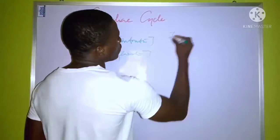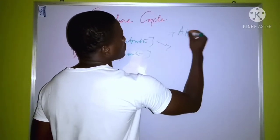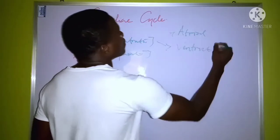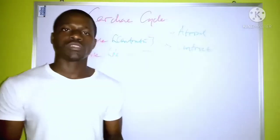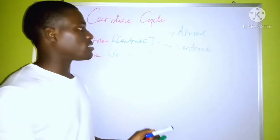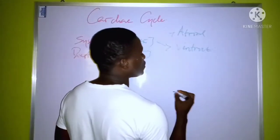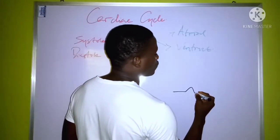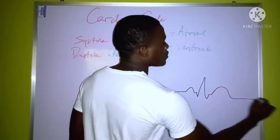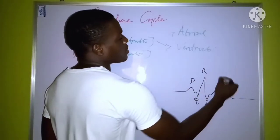We have the atrial systole and the ventricular systole. In order to explain these cyclical activities that occur within the heart, we'll make reference to our ECG representation — that is the graphical representation of electrical activities within the heart. Using this diagram, which is a sketch of the ECG, we have the P wave, the QRS complex, and the T wave.